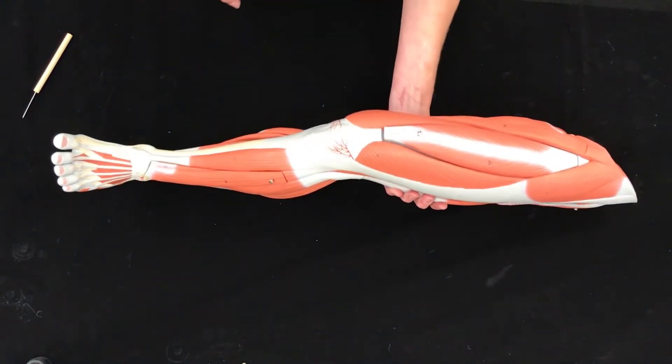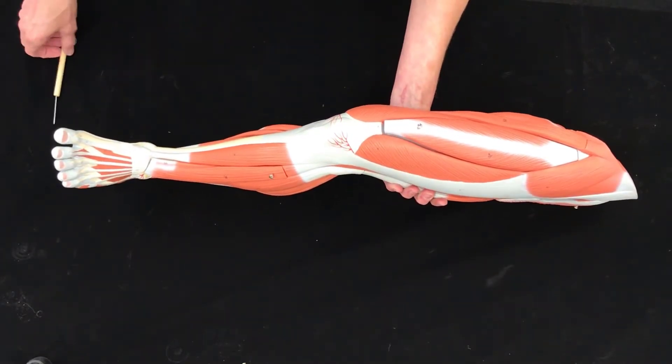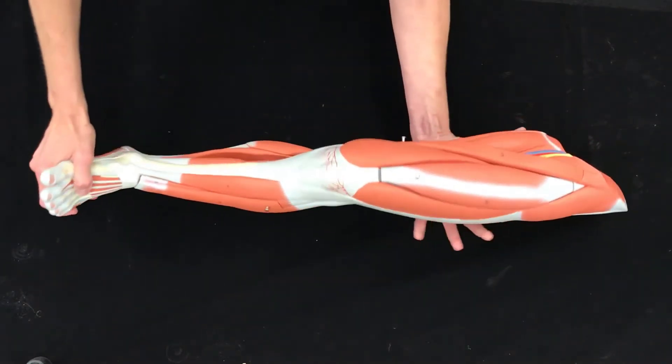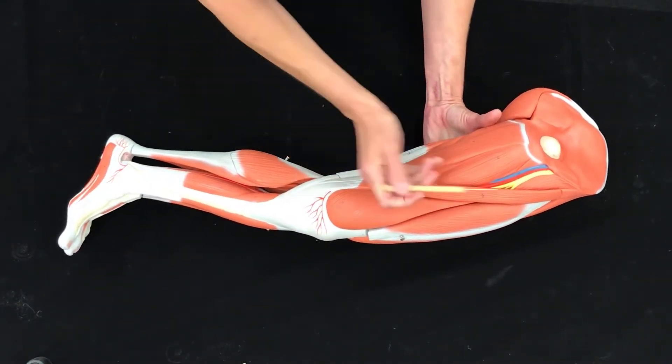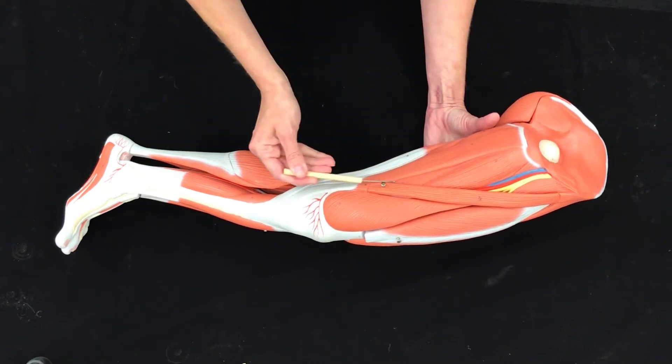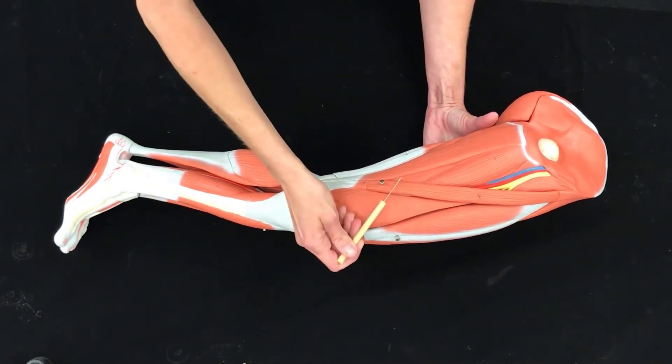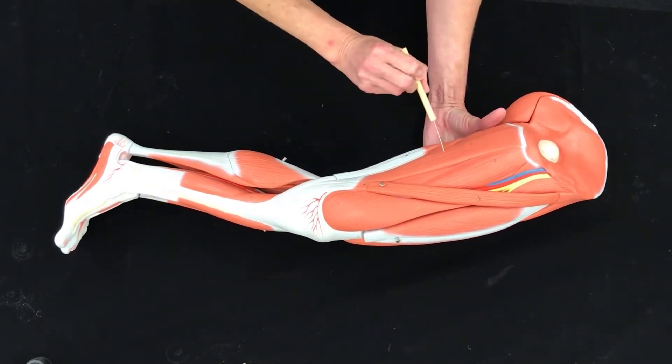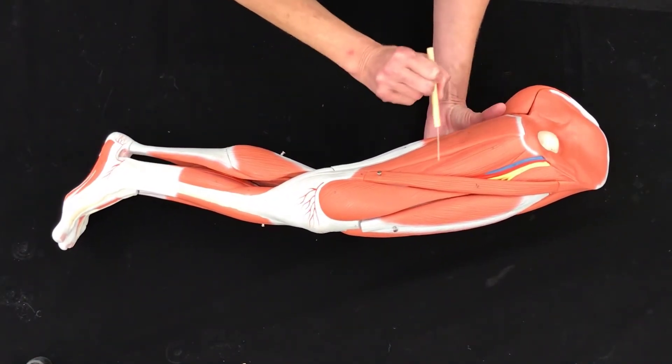Okay, so now we're going to move on to a couple of other structures. So let's move the leg to the side again. Okay, so this area is called the femoral triangle, and much like the Bermuda triangle, you do not want to be near this area. We avoid this area.